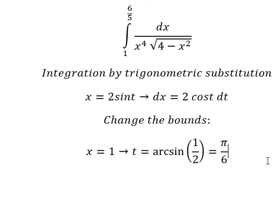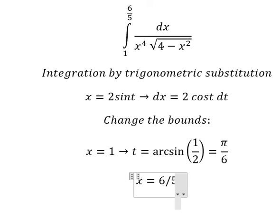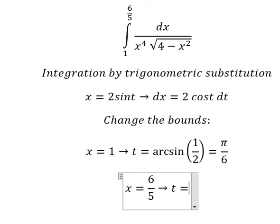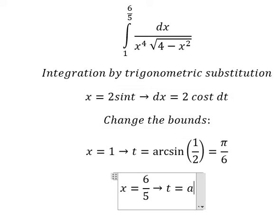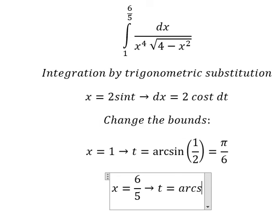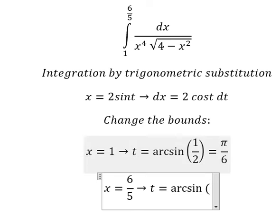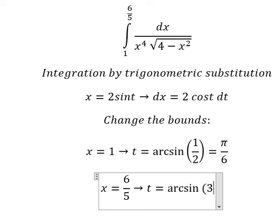Now when x equals 6/5, I put 6/5 in here and divide both sides by 2. We have t equal to arcsin(3/5).